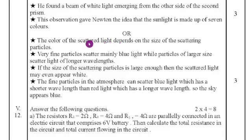He found a beam of white light emerging from the other side of the second prism. This observation gave Newton the idea that the sunlight is made up of seven colors. The second question answer is the color of scattered light depends on the size of the scattering particle. Very fine particles scattered mainly blue light while particles of large size scattered light of longer wavelengths. If the size of the scattering particles is large enough then the scattered light may even appear white in color. Why the sky looks blue color because the fine particles in the atmosphere can scatter the blue light which has the shorter wavelength and red light which has a longer wavelength. So, the sky looks blue in color.